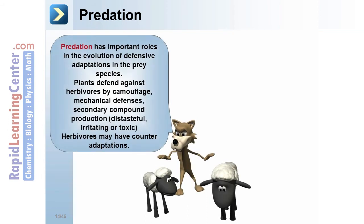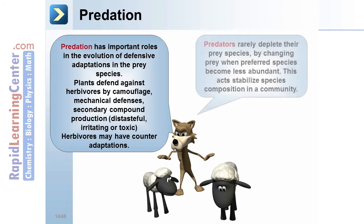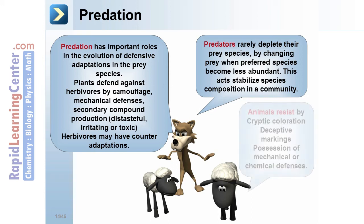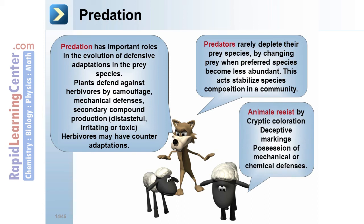Predation has important roles in the evolution of defense adaptations in prey species. Plants defend against herbivores by camouflage, mechanical defenses, and secondary compound production such as distasteful, irritating, or toxic substances. Herbivores may have counter-adaptations. Predators rarely deplete their prey species by changing prey when preferred species become less abundant; such behavior stabilizes species composition in a community. Animals resist predation by cryptic coloration, deceptive markings, and possession of mechanical or chemical defenses.